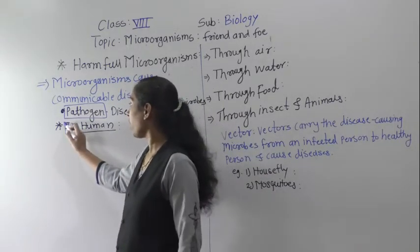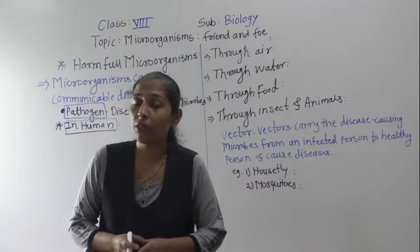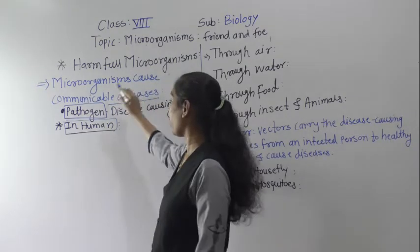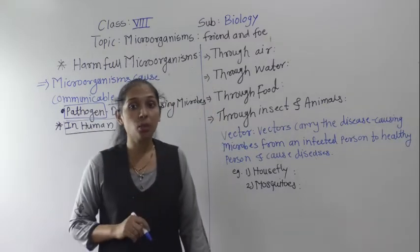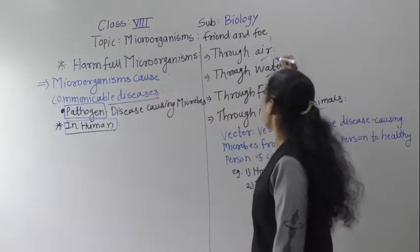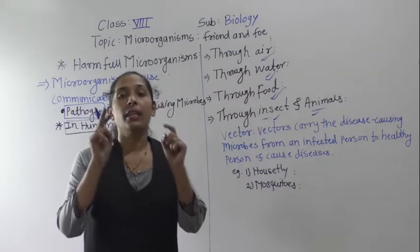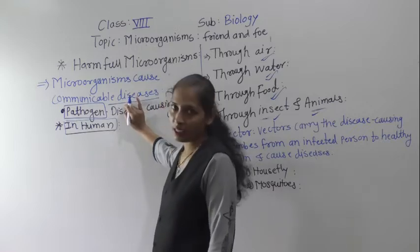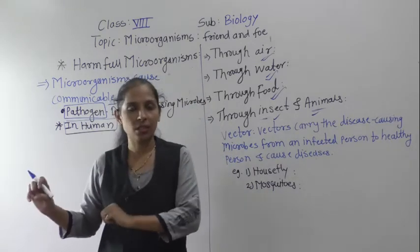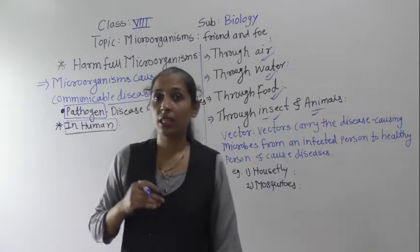The diseases caused by microorganisms are called communicable diseases. A communicable disease is one that gets transmitted from an infected person to a healthy person through air, water, food, insects, animals, or direct physical contact. In other words, communicable diseases are diseases that can spread from one person to another.